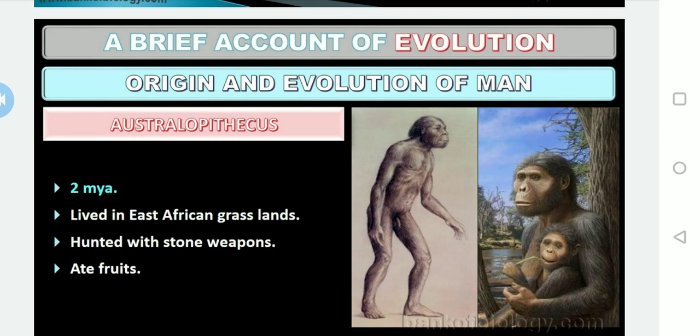According to competitive exam books, Australopithecus lived about five million years ago, but in NCERT it is given as two million years ago — for theory answers, write two million years ago. The fossil evidence shows that Australopithecus is intermediate between ape and man, and the probability is that man might have arisen from an Australopithecus-like ancestor. He lived in east African grasslands.